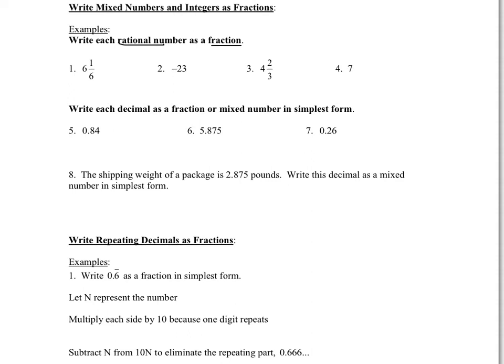For 6 and 1 sixth, you always take the denominator, multiply it by the whole number — so 6 times 6 would be 36 — and then add your numerator, so we'd have 37 over 6. Negative 23 is an integer, so we're going to take that negative 23 and put it over 1. Sometimes you'll see the negative on the 23 in the numerator, or you might see the negative just in front of the fraction bar — negative 23 over 1.